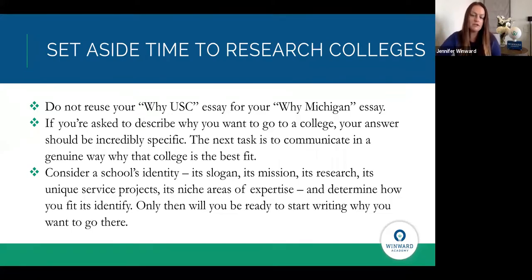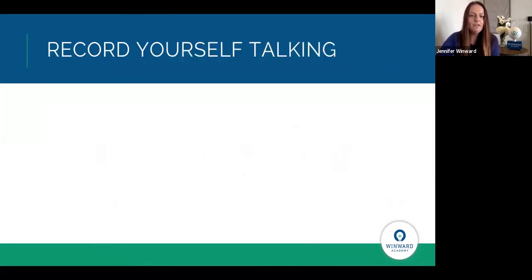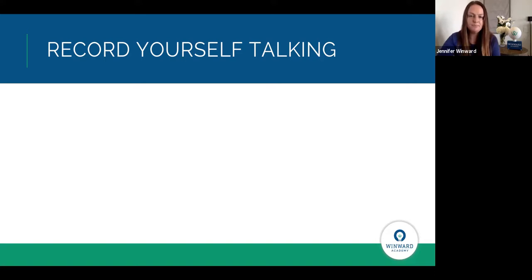When trying to come up with what to say, consider how a college defines its own identity — read its slogan, its mission, its history, understand the service projects they offer, the areas of expertise they're proud of, and look for ways that you fit in those different places. If you're applying to a college and can't clearly articulate why you want to go there, you probably shouldn't be applying. This process is something you should be doing anyway, and especially in a very specific and genuine way if you're asked to write these extra essays on why you want to go.